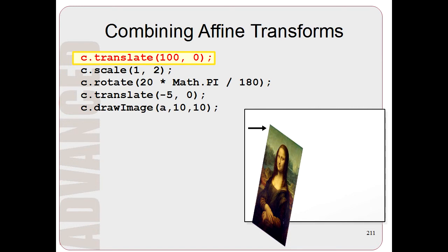And then by translating, we push the image to the right. So this is the effect of what happens when you do all of these transformations. You go through them backwards, and this is what it looks like.